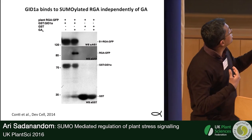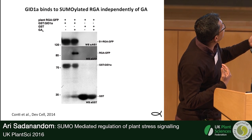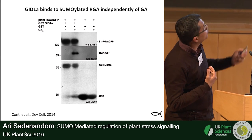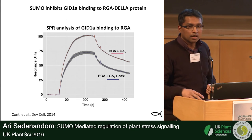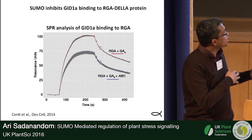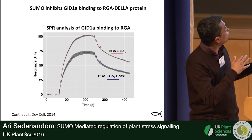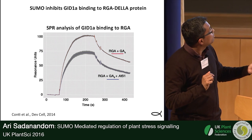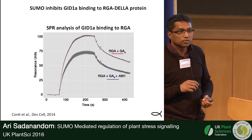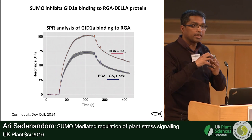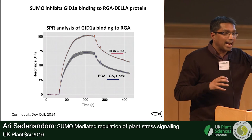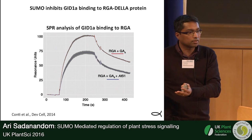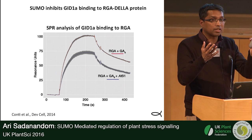The GST pull-down assay shows that whether you have GA or not, SUMO will interact with GID1. We can mimic this in vivo in plants: in pull-down assays, sumoylated DELLA comes down with GID1 regardless of GA, whereas non-sumoylated RGA only comes down with GID1 when GA is present. SPR surface plasmon resonance work confirms this: you put GID1 on a chip, float RGA over it, add GA, and get a nice binding curve — but when you add SUMO to this system, binding drops. Sumoylated DELLA binds GID1 regardless of GA and blocks GID1 from accessing non-sumoylated DELLA.